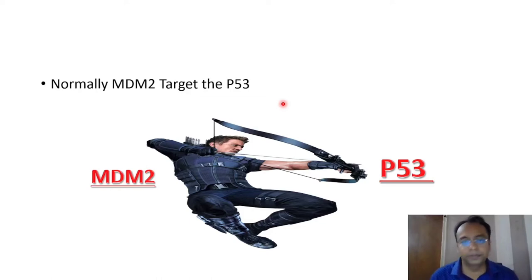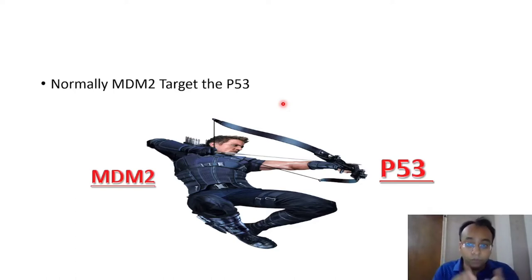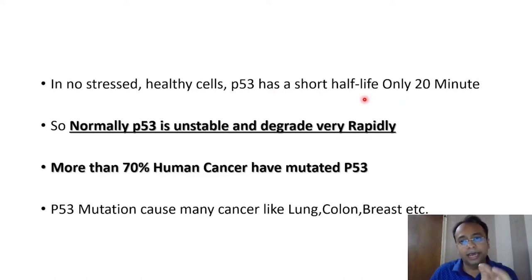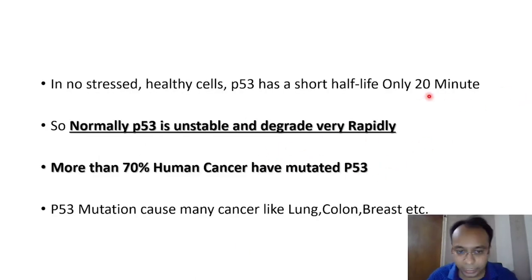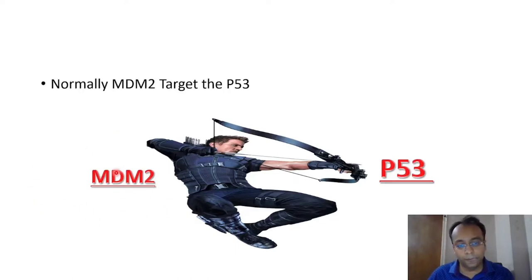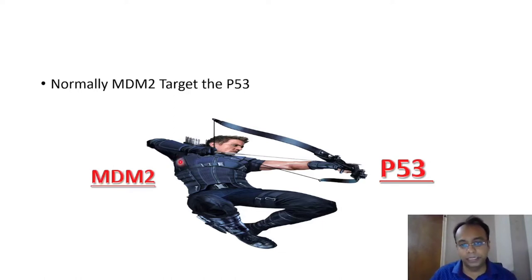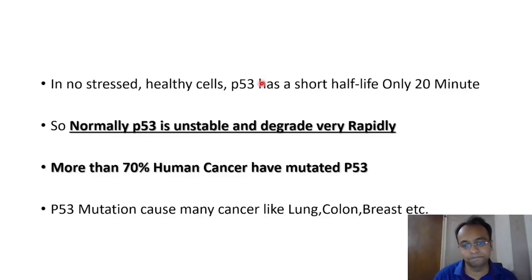An interesting fact: if p53 inhibits the cell cycle, why doesn't it inhibit normal cell proliferation? Because p53 has a very short half-life of only 20 minutes — it is very unstable and rapidly degraded. This is because MDM2 protein specifically targets and rapidly degrades p53 once its function is complete. However, if MDM2 is overexpressed, it can abnormally prevent p53 action, leading to cancer.